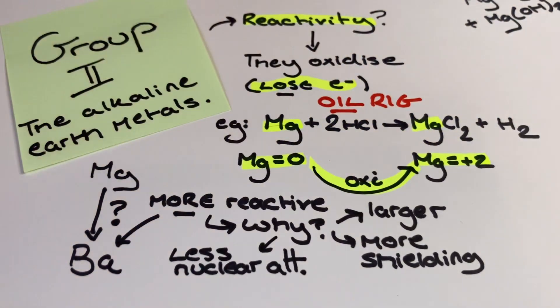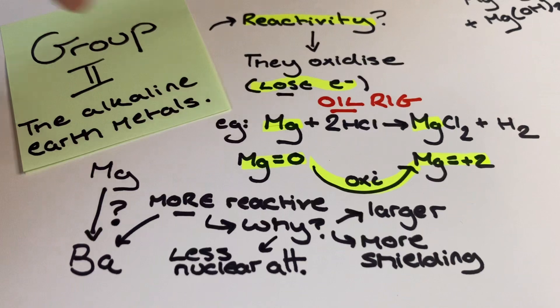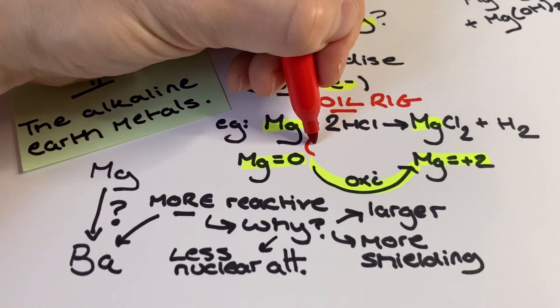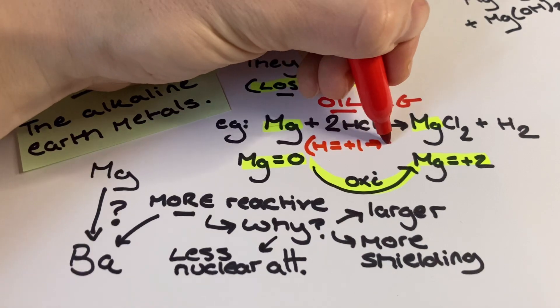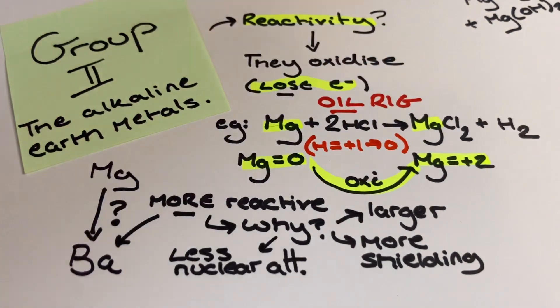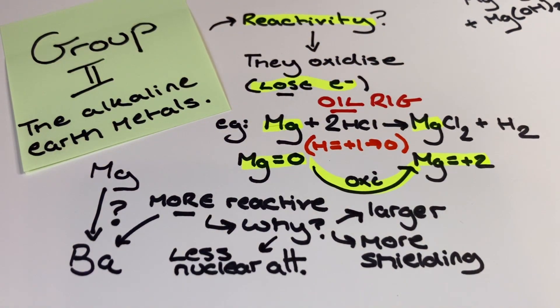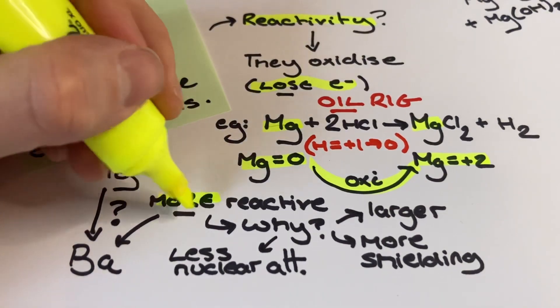The magnesium has an oxidation state of zero on the left hand side because it's the uncombined element, and on the right hand side the magnesium has a plus two oxidation state in the ionic lattice MgCl2. This change in oxidation state from zero to plus two demonstrates that the magnesium is being oxidized. It's worth pointing out, as you can see I've written in red here, that the hydrogen is getting reduced from plus one to zero.